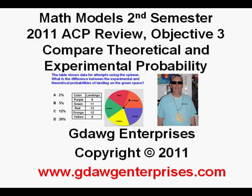This has been Math Model Second Semester 2011 ACP Review Objective 3: Compare Theoretical and Experimental Probabilities. Thanks for viewing.